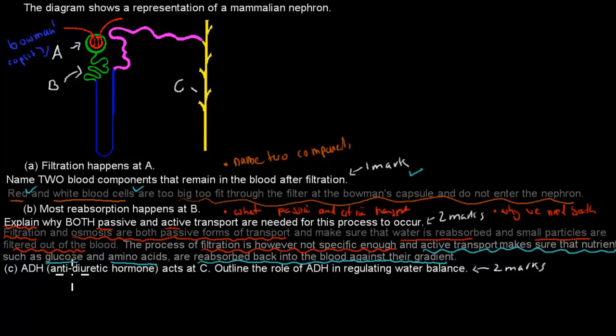And then for C, ADH or antidiuretic hormone acts at location C, so that was the collecting duct. Outline the role of ADH in regulating water balance, that's worth two marks. For this you could mention where is ADH produced, you should also mention when it's released, what conditions it's released, and then obviously what it does.